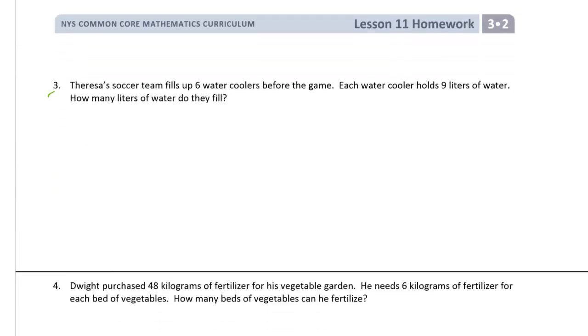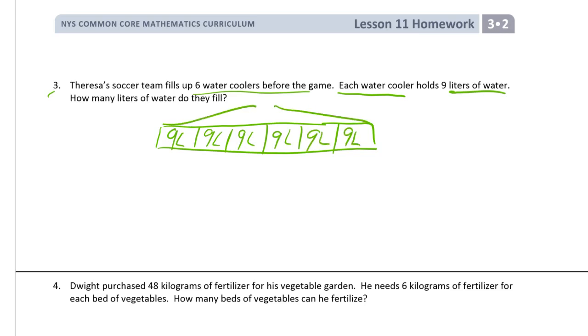Question 3: Theresa's soccer team fills up 6 water coolers before the game. Each water cooler holds 9 liters of water. How many liters of water do they fill? So here's our picture. We need 6 water coolers, right? 1, 2, 3, 4, 5, that makes 6 sections. Each cooler holds 9 liters of water, so we have 9 in all. We have to find all of that. So it's 6 nines, 6 times 9, which equals 54.